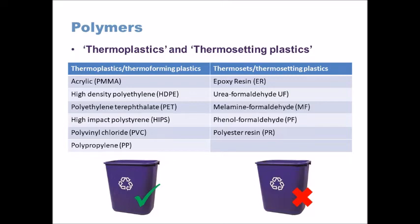A benefit of thermosetting plastics is that they are not really affected by heat, making them good in applications where heat may be applied. For example, pan handles on frying pans or saucepans may be made from a thermosetting plastic because they are resistant to heat — they remain insulative and useful for the purpose.